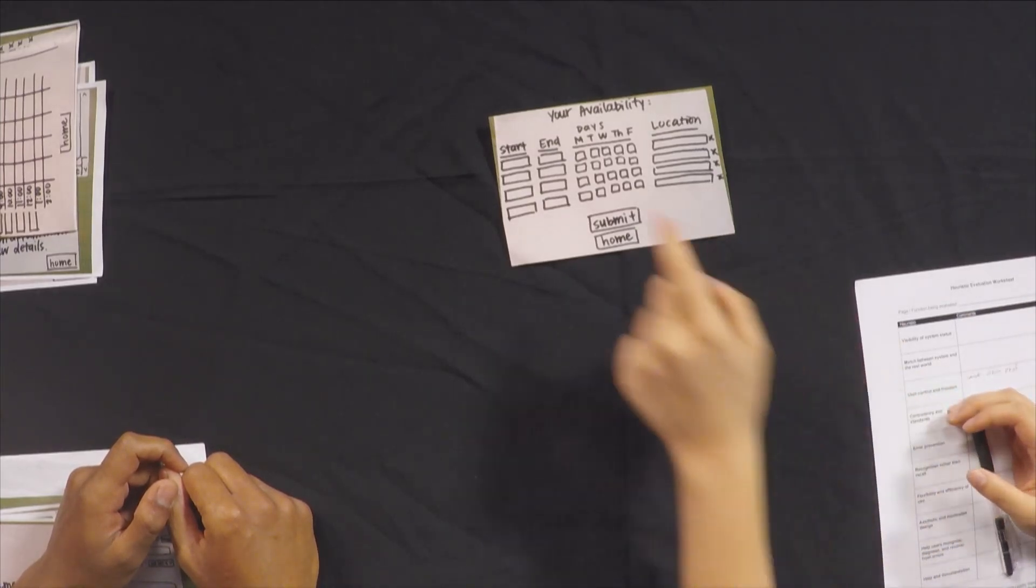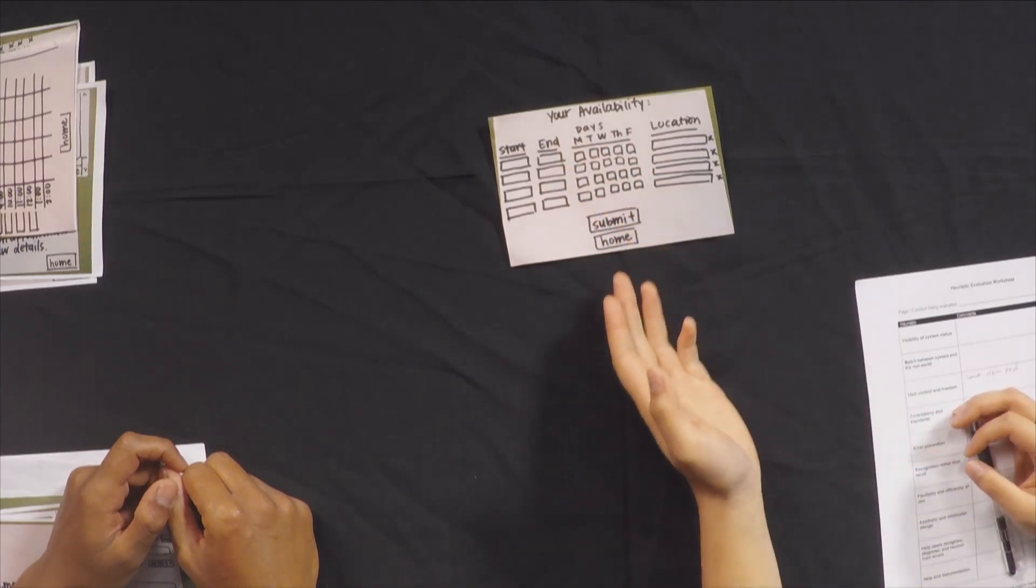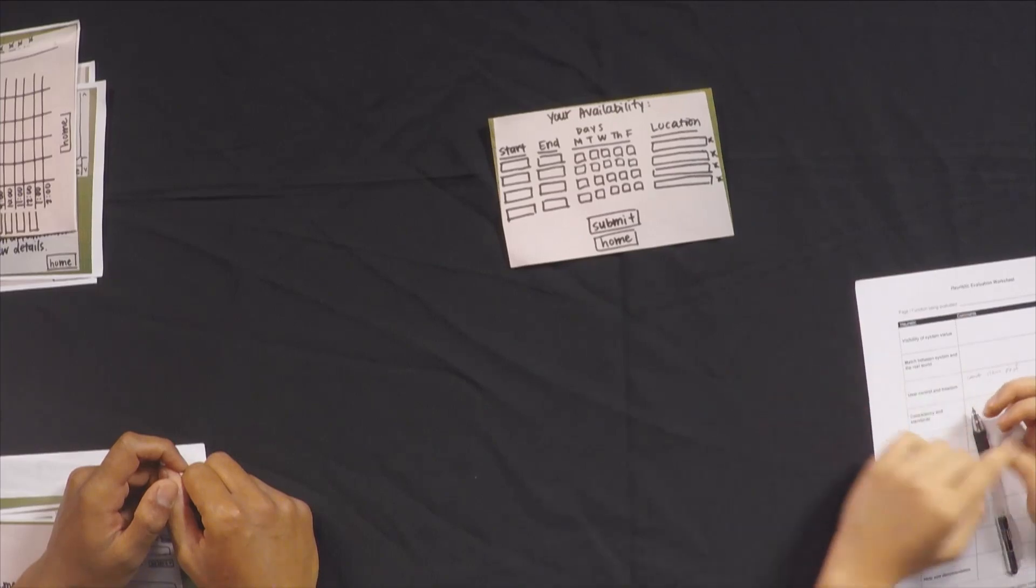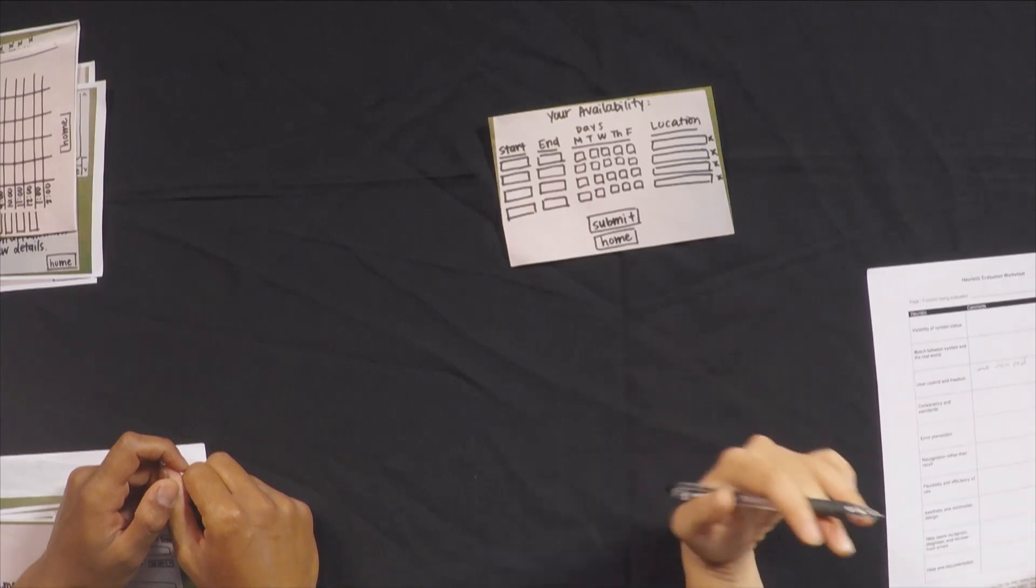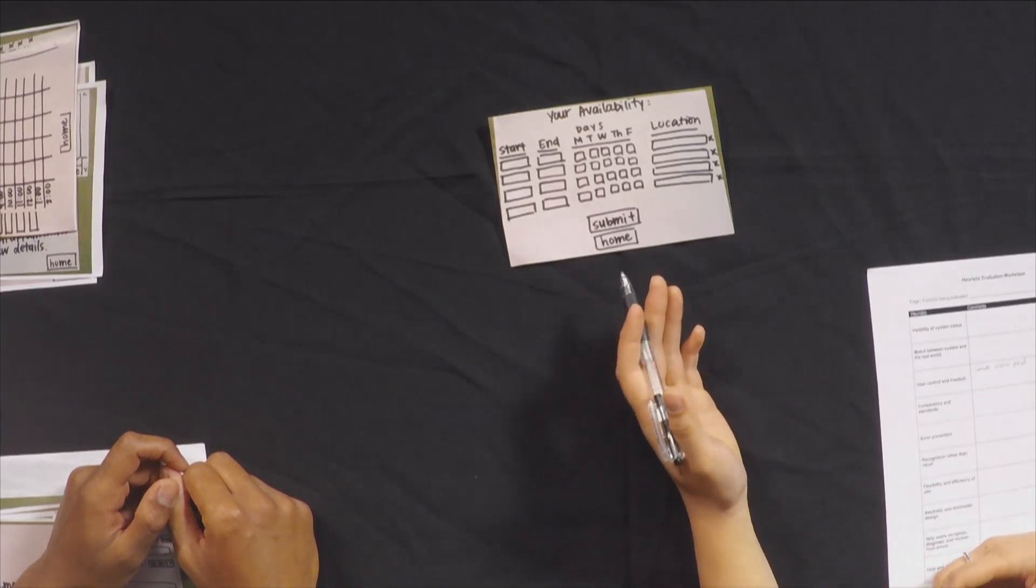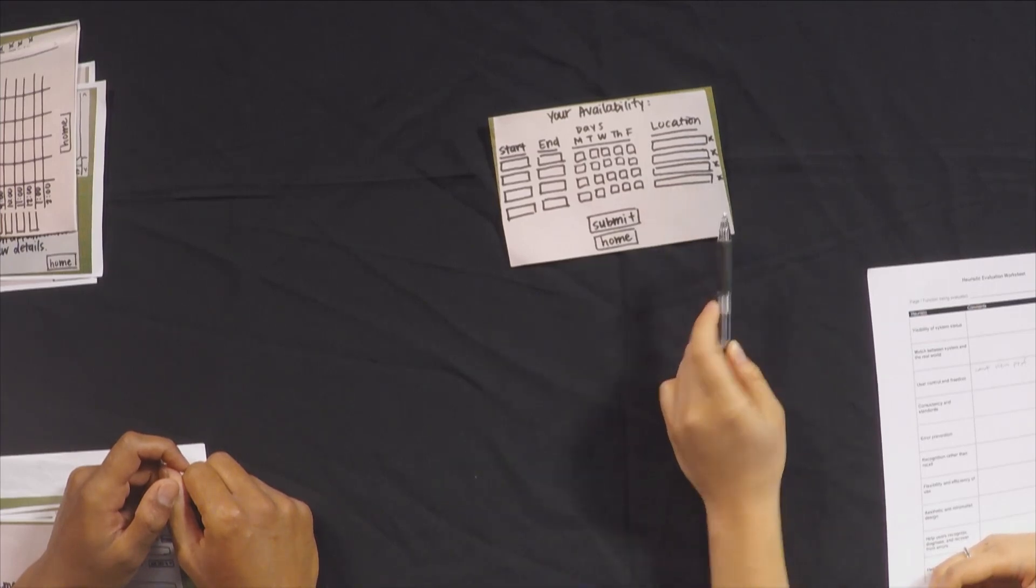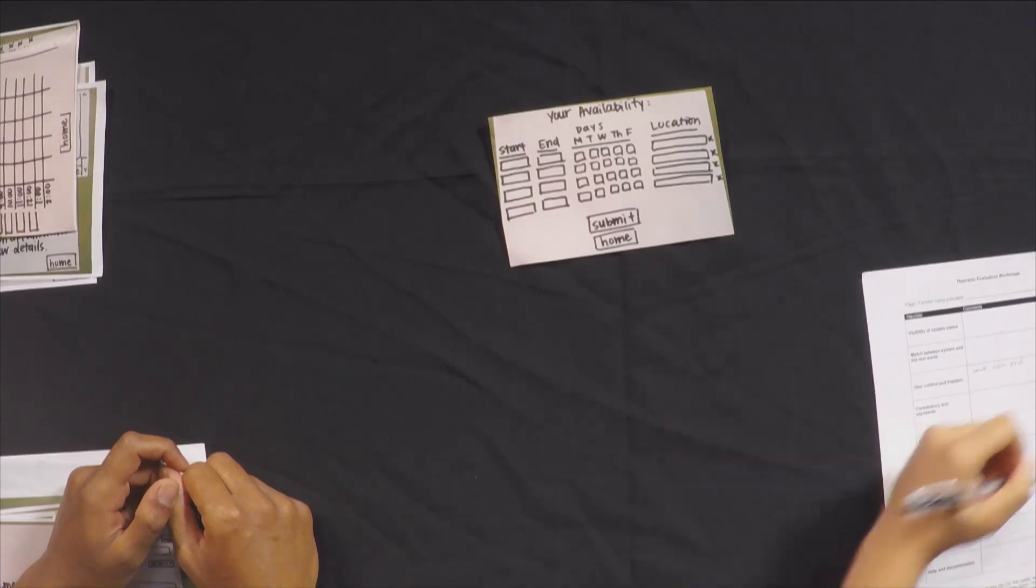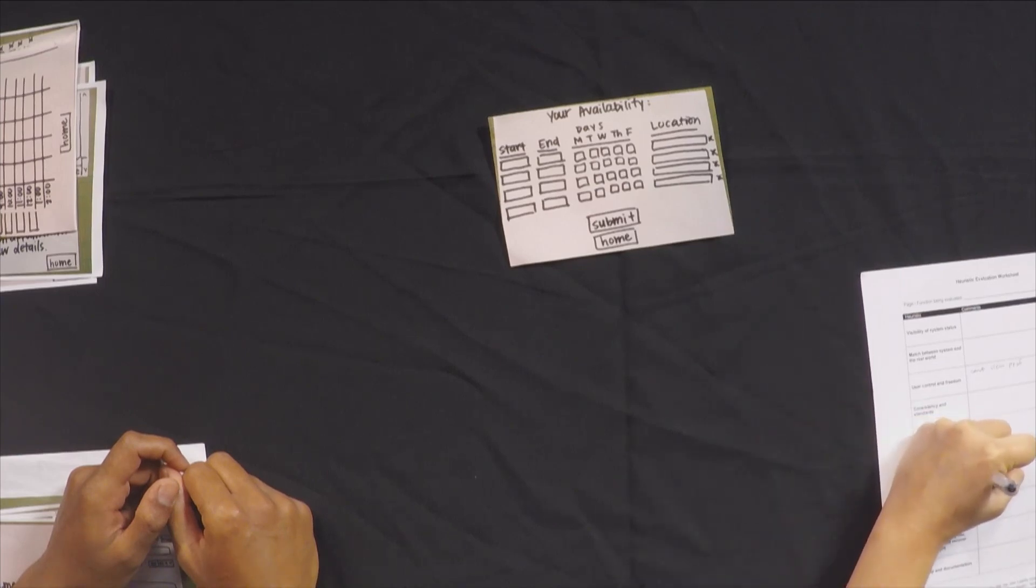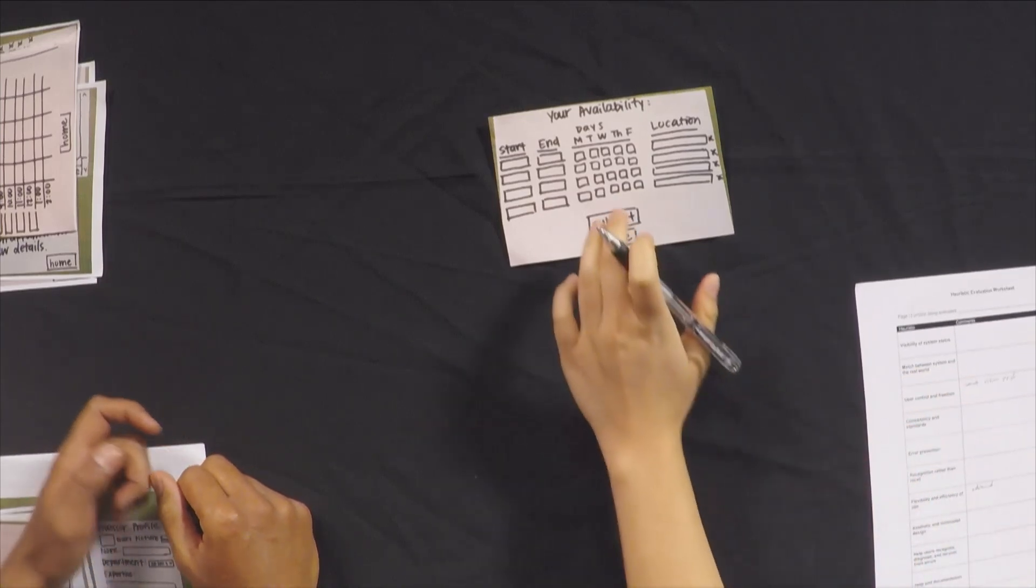So I noticed that there's only days of the week but the actual date is very important. And two, I think there's an issue of flexibility and efficiency of use because if I were a professor and I use this a few times, I think usually I would meet in the same locations and I wouldn't want to fill this out every time. So I think there should be a faster way to go through this process. I'll put down advanced users function under flexibility and efficiency of use. So let's submit some times.